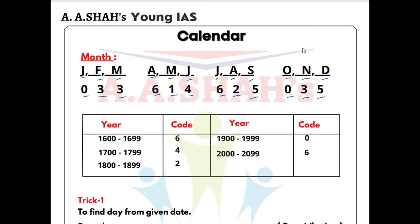Now the codes for the year by century: 1600–1699 the code is 6; 1700–1799 the code is 4; 1800–1899 the code is 2; 1900–1999 the code is 0; and 2000–2099 the code is 6. Most exam questions come from 1900–1999 (code 0) and 2000–2099 (code 6), so make sure to remember these two.